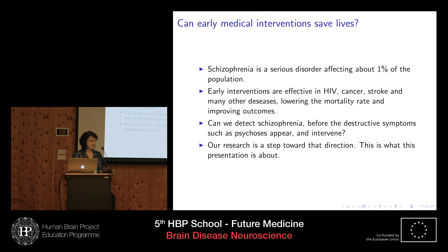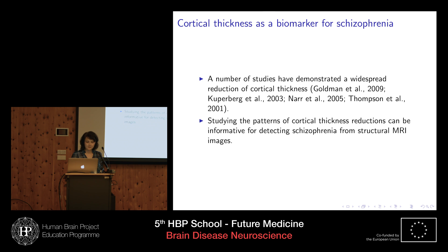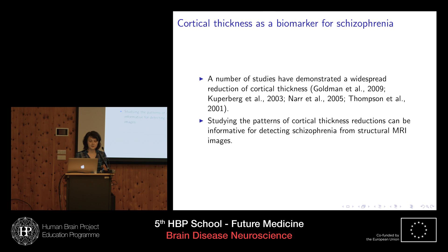And this is what this presentation is about. An important biomarker for schizophrenia is cortical thickness values. It has been shown in several studies that there is widespread reduction in cortical thickness in schizophrenia. We would like to see whether we can use these patterns of cortical thickness reduction to computationally distinguish patients with schizophrenia from normal controls.